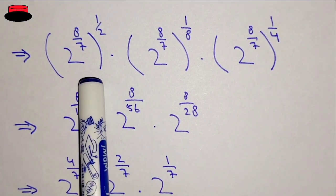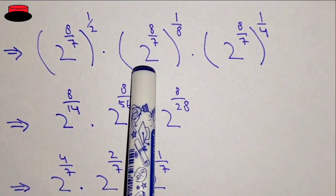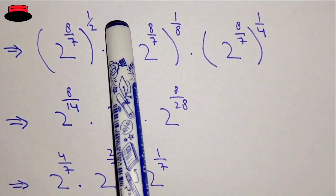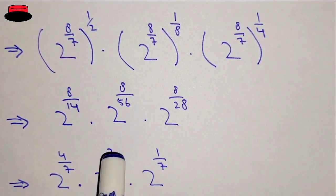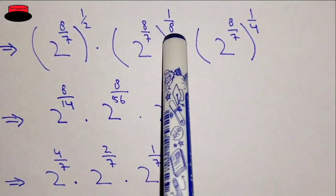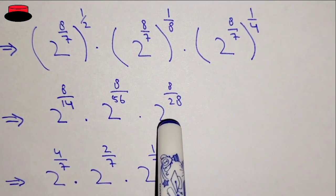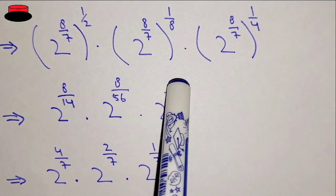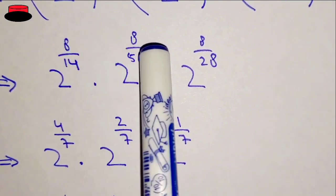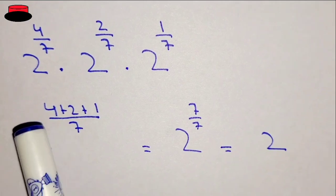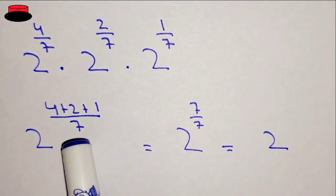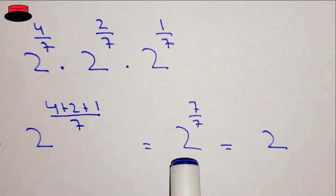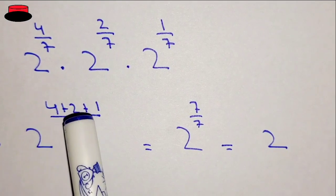After solving we get: 2 power eight over seven, whole power one upon two; into 2 power eight over seven, whole power one upon eight; into 2 power eight over seven, whole power one upon four. Let's reduce these values for simplification. We will find the LCM: 2 power four plus two plus one divided by seven. The bases are the same so powers are added.